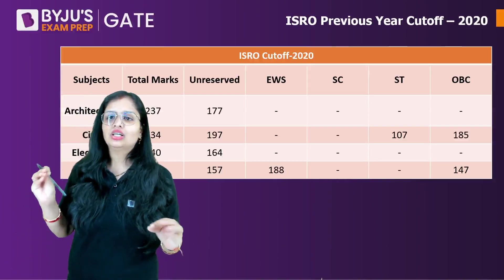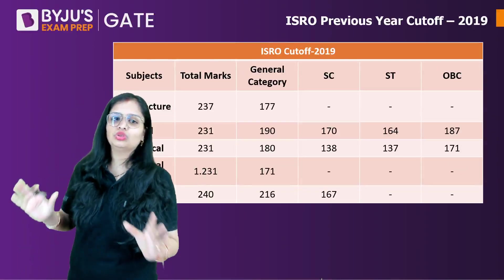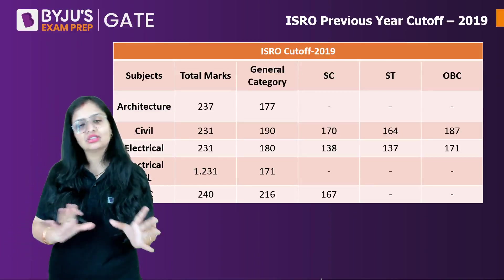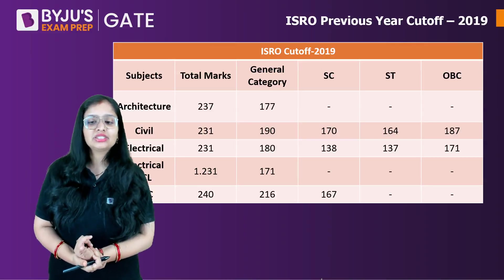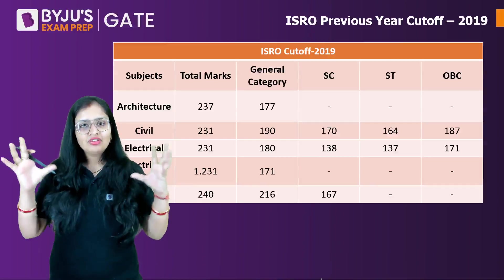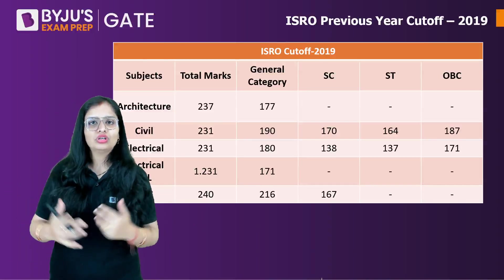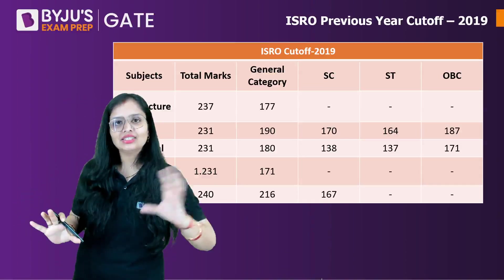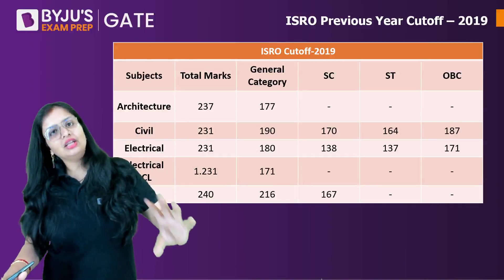I have data for three years of cutoffs. For 2019, Architecture, Civil, Electrical, and RAC are all given category-wise. If some branches or categories are not listed, don't worry — you can estimate. For example, if Architecture SC category is there, they also need to score around 165 to 170. So aim for the upper edge so that even if you fall slightly below, you can still clear the cutoff.